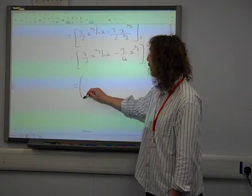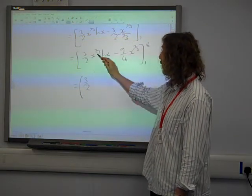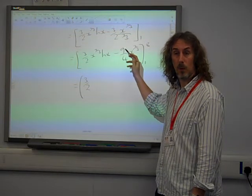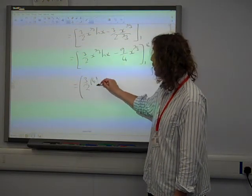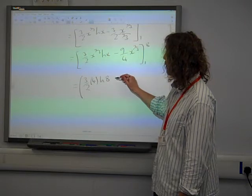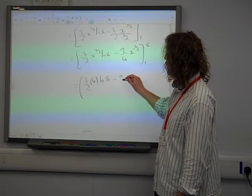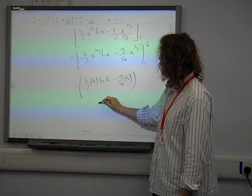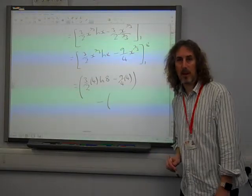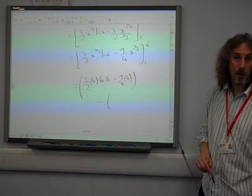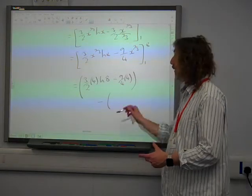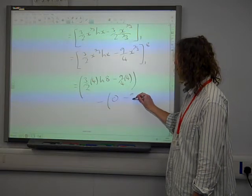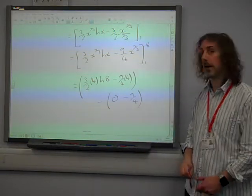Now we've summed the limits, 3 over 2, 8 to the power of two thirds is 4, times ln 8, take away 9 over 4 times 4. And then we're subtracting what we get when we've put 1 into it, where natural log of 1 is 0, and then we've got take away the 9 over 4 from that bit.